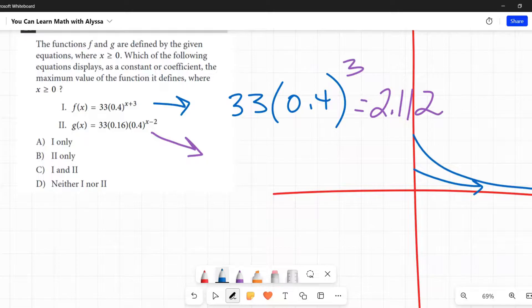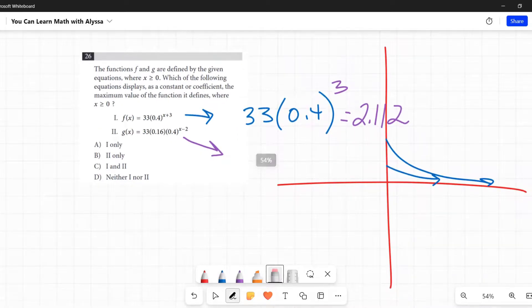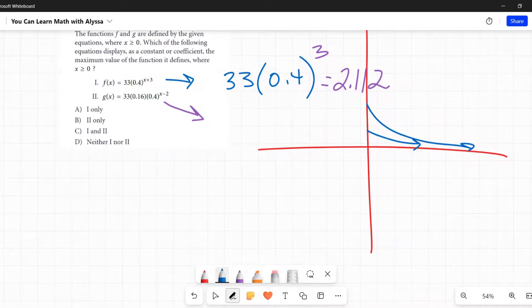Second one, I'm going to plug in 0: 33 times 0.16 times 0.4 to the power of x minus 2. I should have written that down lower, shame on me, clearly that was poor planning on my part. Let's redo that: 33 times 0.16 times 0.4 to the power of x minus 2. And we want x to be 0, so 0 minus 2 is just negative 2.